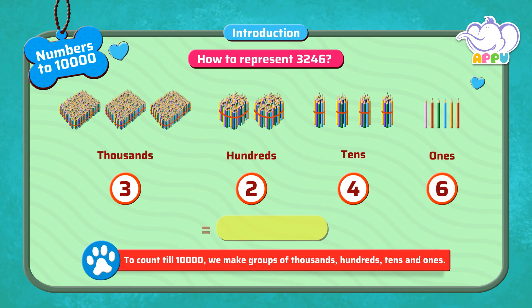We have three thousands, two hundreds, four tens, and six ones.